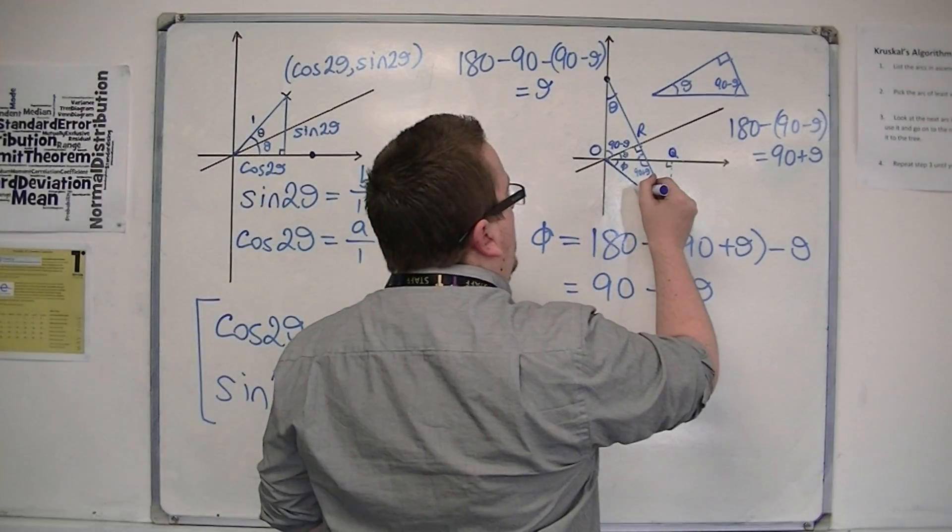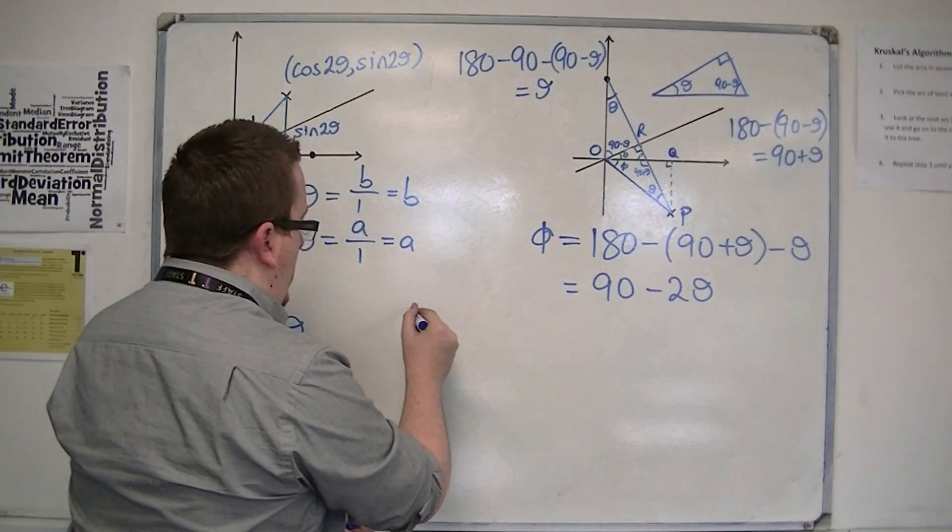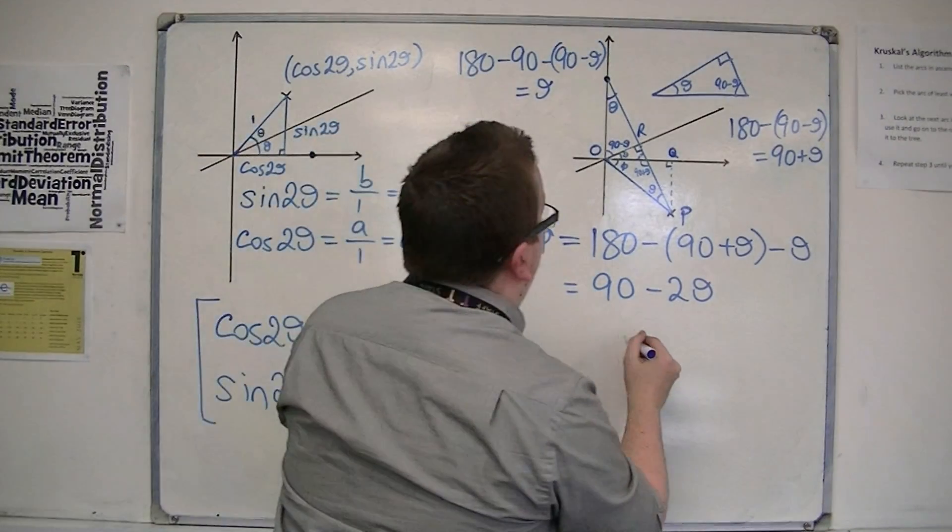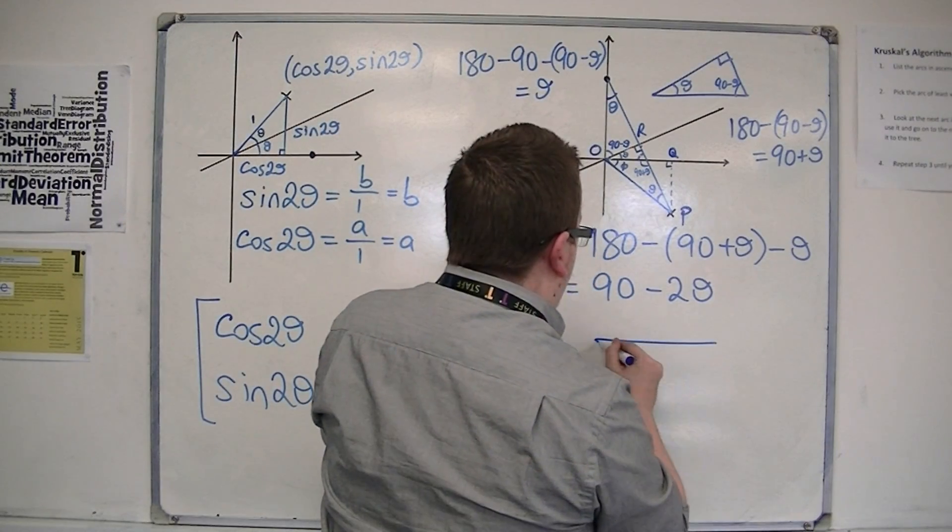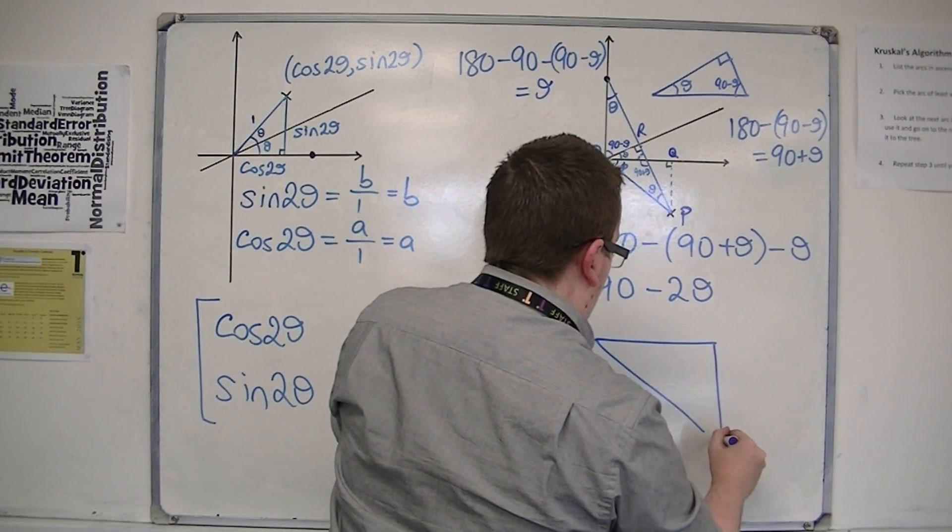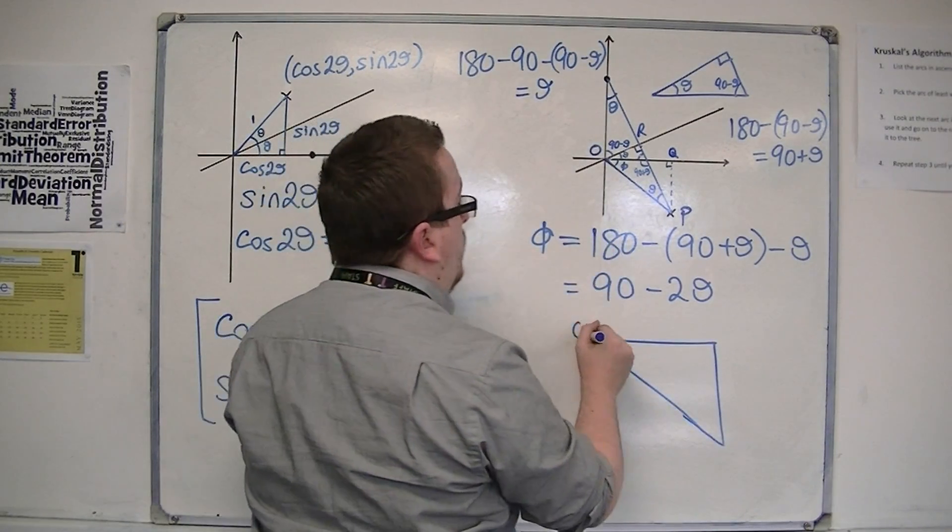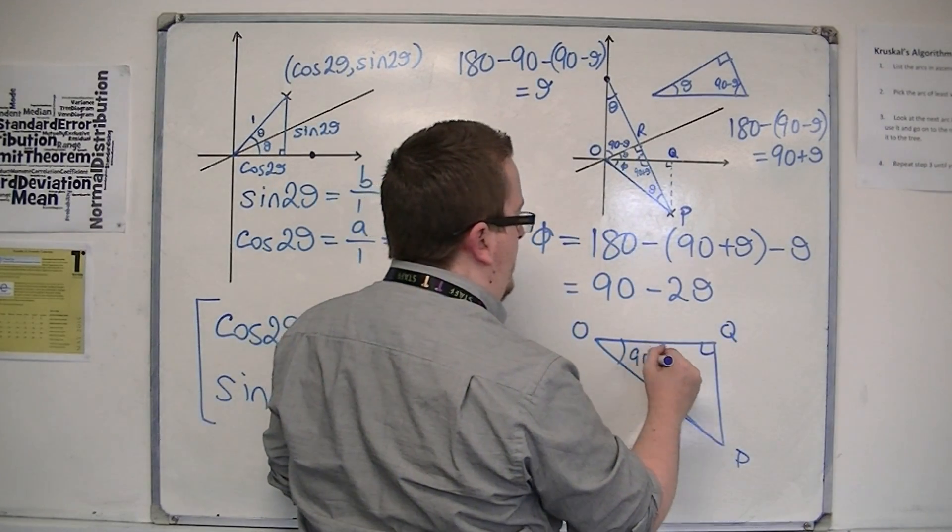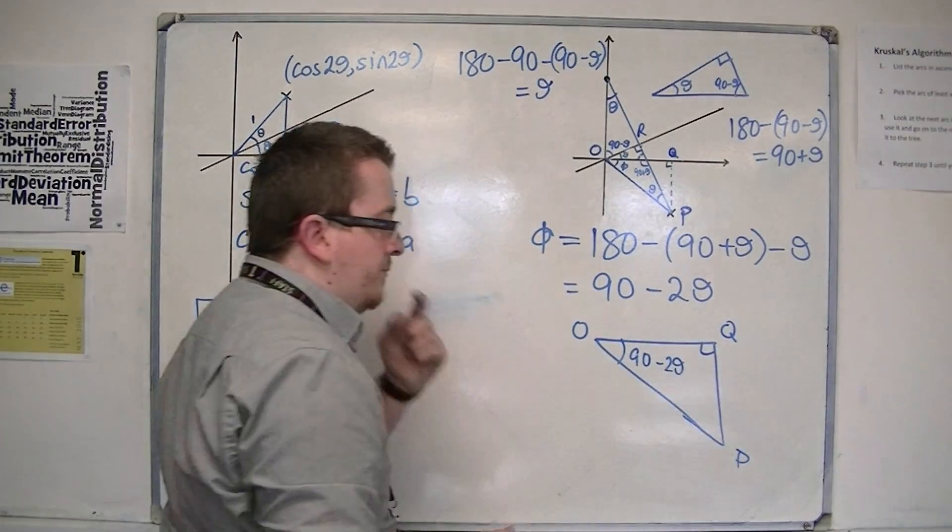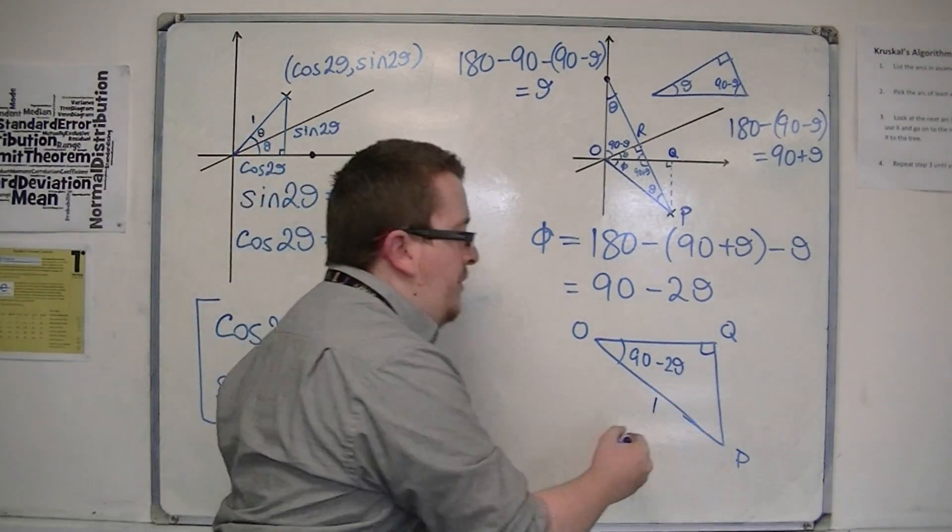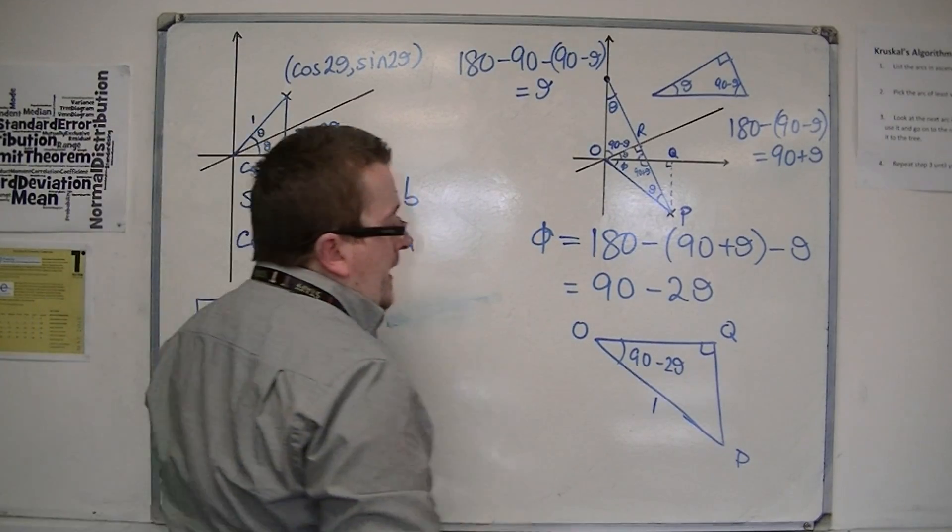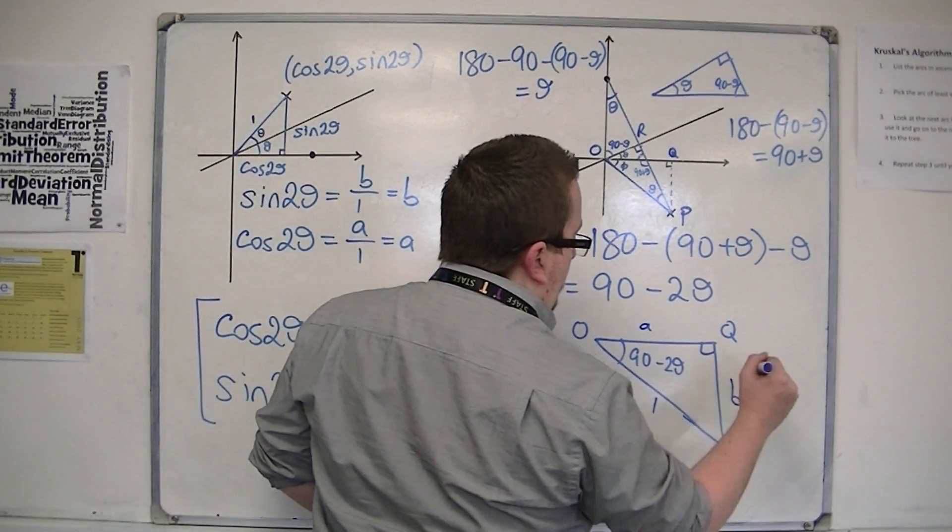Because now, if I'm just looking at a right angle triangle, I'll draw it here. Here, this is the triangle OQP, and I now know that this angle is 90 minus 2 theta and the hypotenuse is 1.